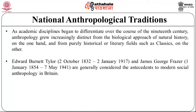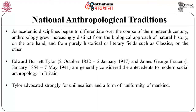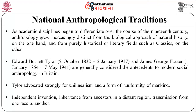Edward Burnett Tylor and James George Frazer are generally considered the antecedents to modern social anthropology in Britain. Although Tylor undertook a field trip to Mexico, he and Frazer derived most of the material for their comparative studies through extensive reading — mainly the classics, literature and history of Greece and Rome, the work of early European folklorists, and reports from missionaries, travelers, and contemporaneous ethnologists. Tylor advocated strongly for the unity and uniformity of mankind, and laid the groundwork for theories of cultural diffusionism, stating that there are three ways different groups can have similar cultural forms: independent invention, inheritance from ancestors in a distant region, and transmission from one race to another.